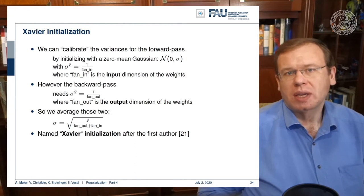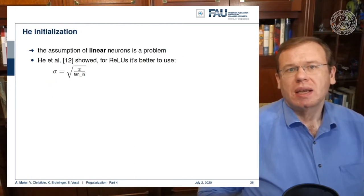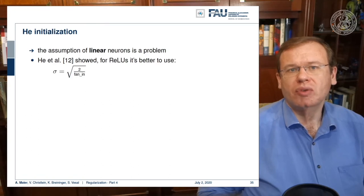Well, what else can be done? There is He initialization, which then also identifies the assumption of linear neurons as a problem. So in 12, they showed that for ReLUs, it's better to actually use the square root of 2 over fan in as the standard deviation. So this is a very typical choice for initializing the weights randomly.